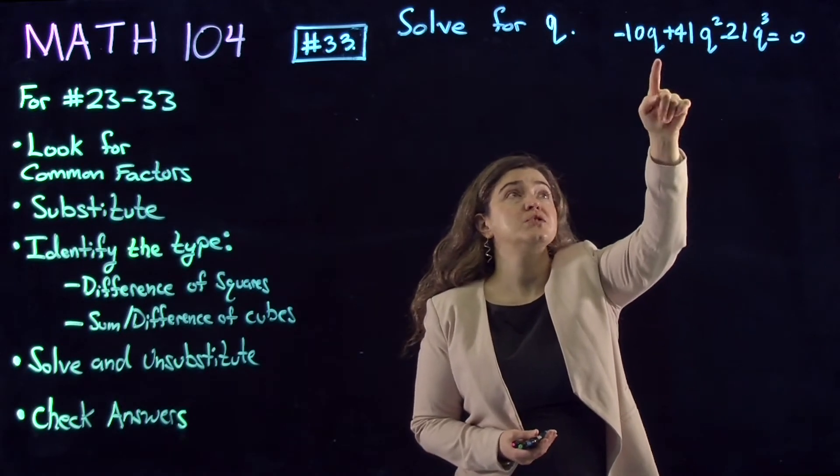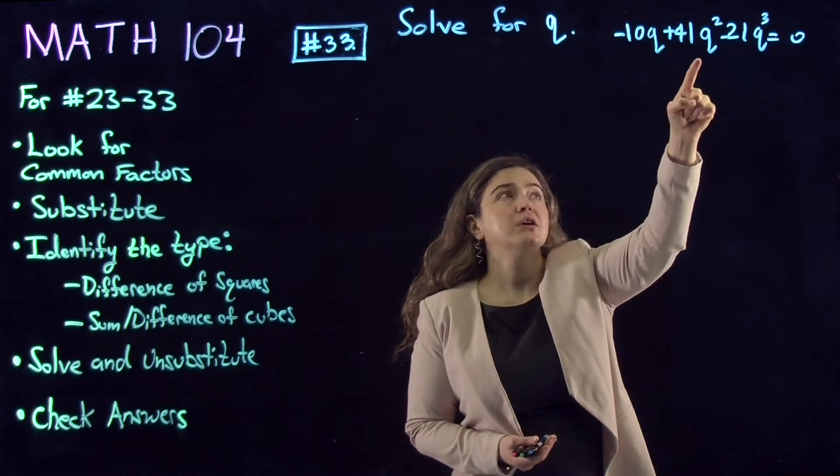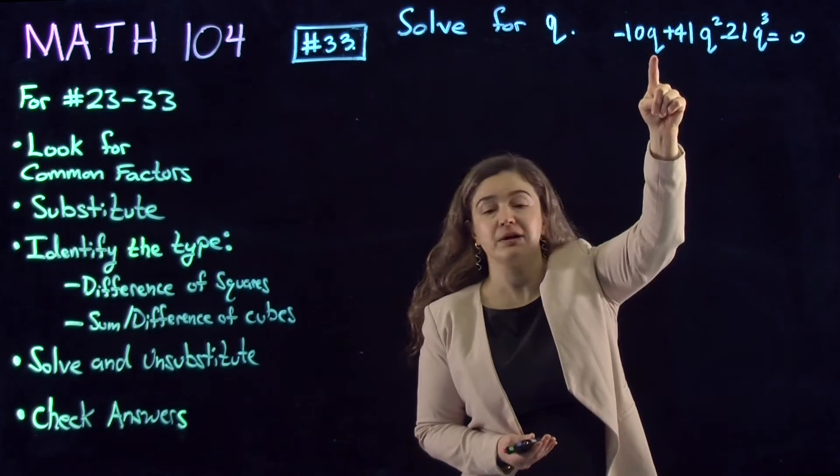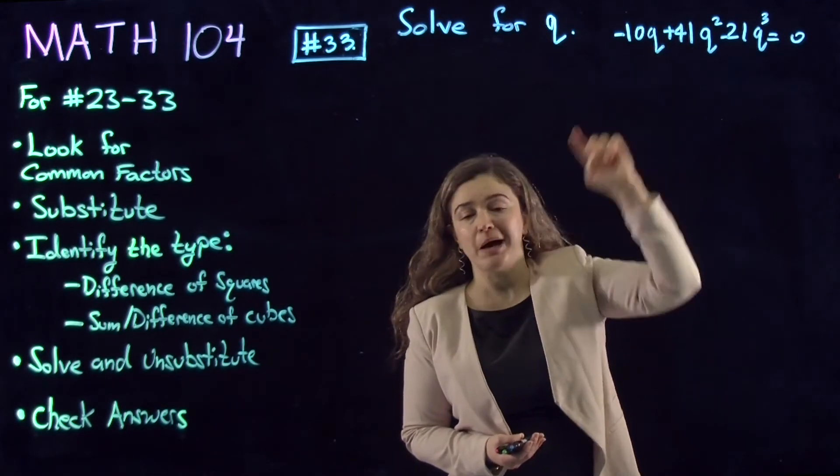And I see that each term has a variable q, therefore I can factor out q to the lowest power, which is q to power 1.